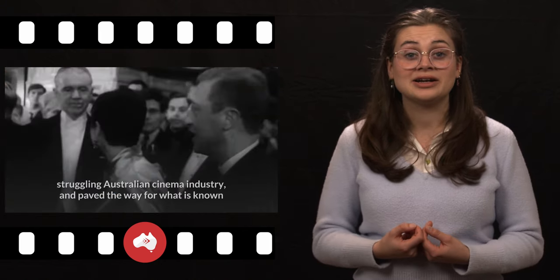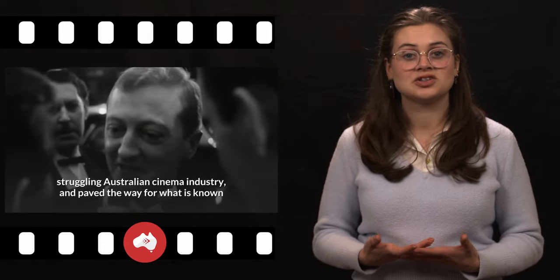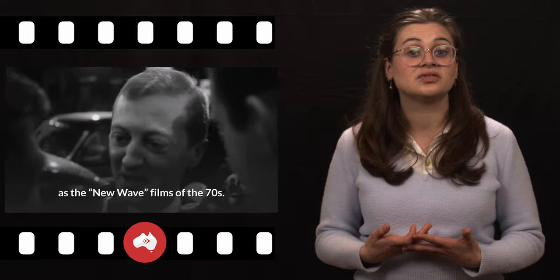There is an underscore of subtle racism throughout the production between some of the Anglo-Saxon and Anglo-Irish characters, an element of which would not be considered acceptable by today's standards. Nevertheless, They're a Weird Mob was a massive box office success in Australia, and although much less successful abroad, has been credited with rejuvenating the struggling Australian cinema industry and paved the way for what is known as the new wave films of the 70s.